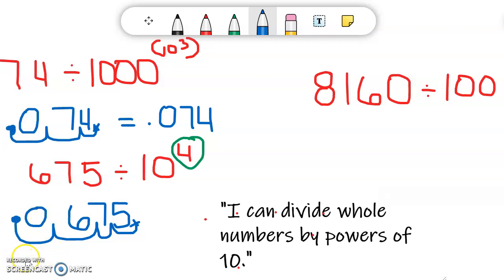Now I'm going to rewrite my product, and that is the decimal point first, 0.675, or 675 thousandths would be the way that we would read that decimal. So then on to our last example, we have 8,160 divided by 100.